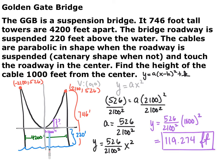Since this is 1,000 feet away from the center and our center is the origin, x = 1,000. Plugging x = 1,000 into our model equation, we get y ≈ 119.274 feet. So the height of the cable off the roadway is about 119.274 feet. We modeled this real-world situation with a parabolic function. This has been mathematical modeling, specifically with quadratic modeling.